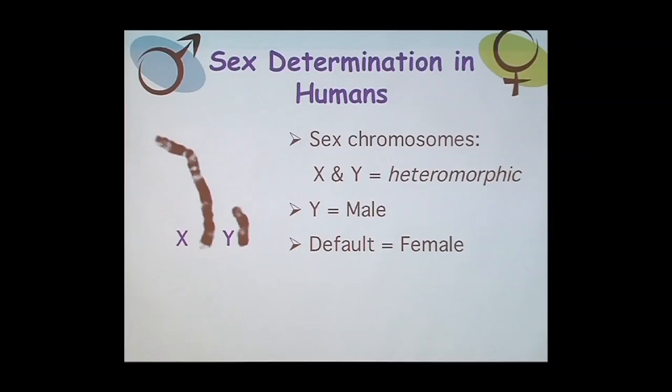The next inheritance pattern we want to talk about is X-linked inheritance. Before we talk about X-linked inheritance, I want to review some points about the sex chromosomes. In humans we have two sex chromosomes, the X and the Y, and these two chromosomes don't look alike — they're very different. They're called heteromorphic, for hetero meaning different.